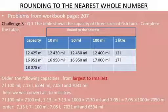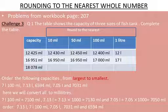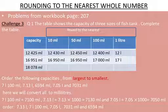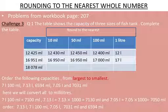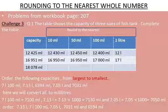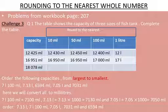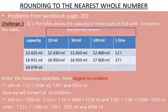The correct order from largest to smallest is: 7.13 liter (7130 ml), then 7 liter 100 ml (7100 ml), then 7.05 liter (7050 ml), then 7031 ml, and the smallest is 6594 ml. Always take care with conversions and read the question clearly to know whether it asks for largest to smallest or smallest to largest.